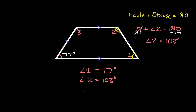Now lastly to find angle three — like I mentioned, obtuse angles are equal to each other. So this obtuse angle is equal to this one. If this is 103, so is this one. So angle three is also 103.